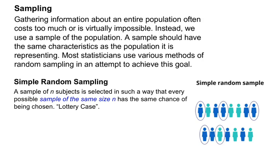Now, sampling — how do we actually get this data? One of the first techniques is simple random sampling, which we refer to as the lottery case. You give everyone a raffle ticket, put them in a hat, shake it up, and pull from there. With today's technology, we have more sophisticated ways — like using an Excel spreadsheet with a computer program to randomly generate a number. But in the simplest case, everyone has an equally likely chance of being selected.